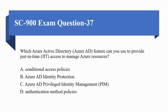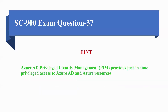Next question: which Azure Active Directory feature can you use to provide just-in-time access to manage Azure resources? Options are: A) Conditional Access Policies, B) Azure AD Identity Protection, C) Azure AD Privileged Identity Management, D) Authentication Method Policies. The correct option is C, Azure AD Privileged Identity Management, because it provides just-in-time privileged access to Azure AD and Azure resources.